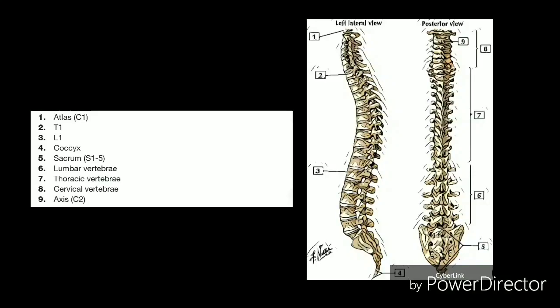The thoracic spine curvature is called kyphosis, also known as hunchback. An abnormal curve from side to side is called scoliosis. Vertebrae are the 33 individual bones that interlock with each other to form the spinal column. The vertebrae are numbered and divided into regions.